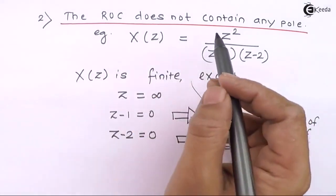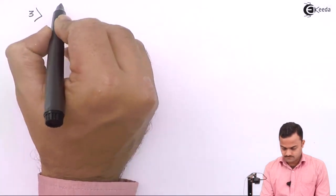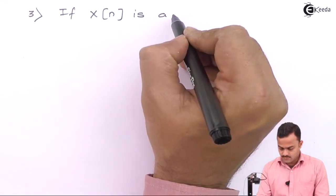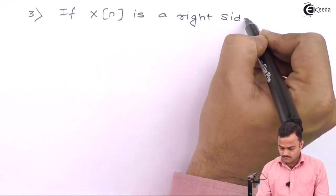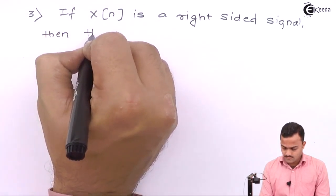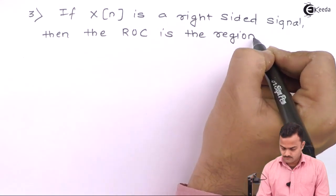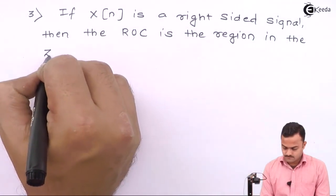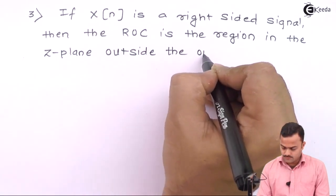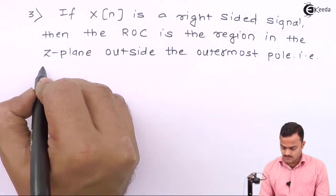Beside the location of the poles, everywhere X(z) exists finitely. Third property: if x(n) is a right-sided signal, then the ROC is the region in the Z-plane outside the outermost pole.